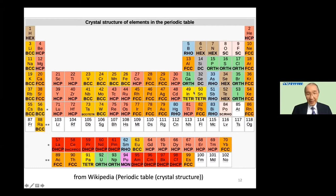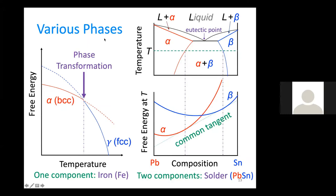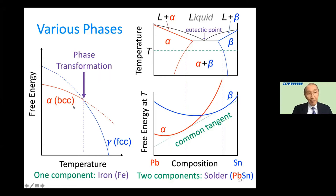For a one-component system, for example pure iron, the BCC phase is most stable at zero temperature, but at high temperature the gamma FCC phase becomes more stable. This can be compared by looking at the free energy of two phases: the BCC alpha phase free energy and the FCC gamma phase free energy have a crossover intersection at a certain temperature, corresponding to the phase transformation temperature.